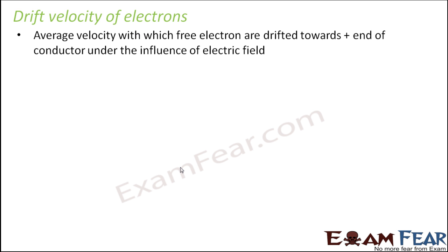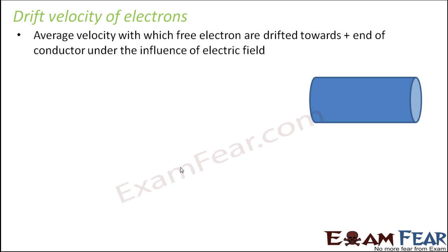So what is drift velocity? It is the average velocity with which electrons are drifted towards the positive end of a conductor under the influence of an electric field. Let's say that this is a conductor and you have electrons inside it. When you apply an electric field E, all the electrons inside the conductor start moving slightly towards the positive end under the influence of this electric field.